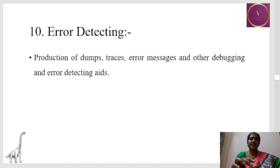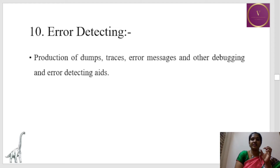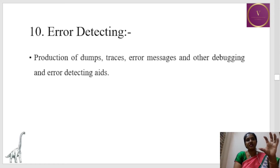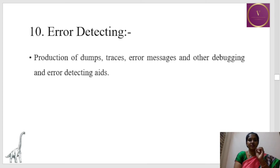Next is the error detection system. When we make some kind of mistake, there will be dialog boxes popping up saying some error message. That is the function of operating system under error detection. OS can produce dumps, traces, or error messages that give information to the user by popping up the error message. Other debugging and error detection work is also done by the OS under error detection.